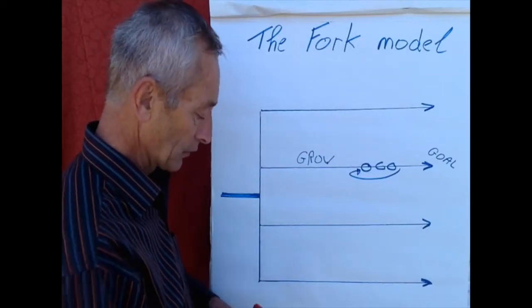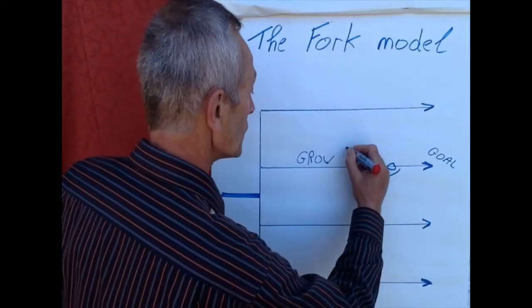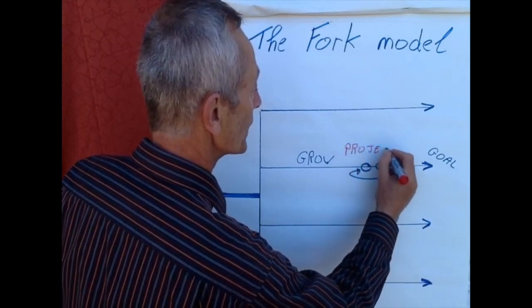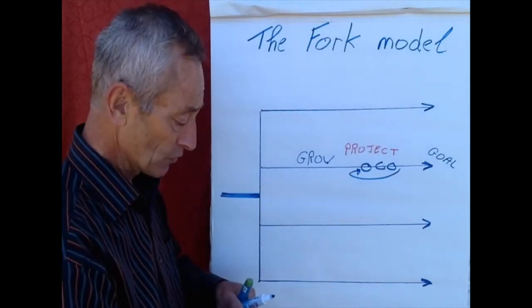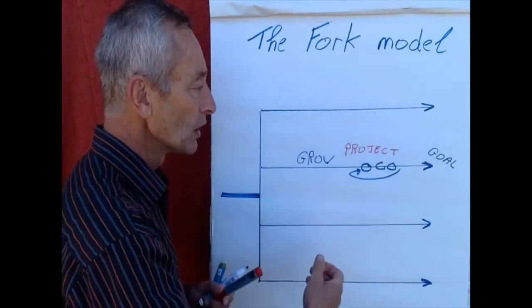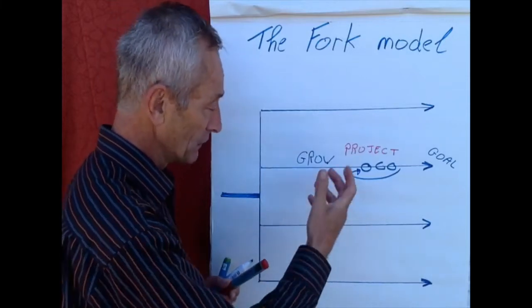In the GROW model, which I call project in my model, this is a progression in action-oriented behavior. You make a difference by doing something, by setting a goal and doing to achieve the goal.